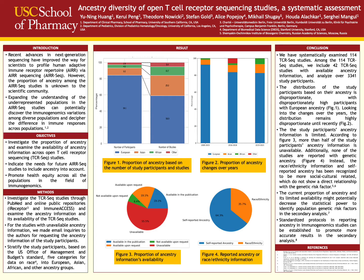After email inquiries requesting ancestry information from the authors, only 38.2% of T-cell receptor sequencing studies had available ancestry information. Based on Figure 4, the ancestry information acquired is either self-reported, investigator-reported ancestry information, or race/ethnicity data.